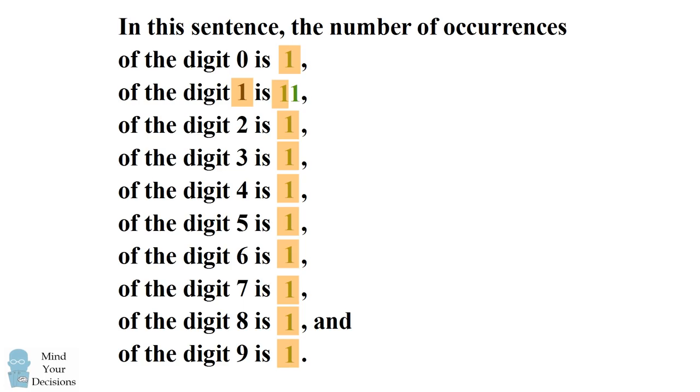Now when we do that, we have another problem. We've introduced another digit one. So now we have a total of twelve occurrences of the digit one. So let's replace this value with twelve.